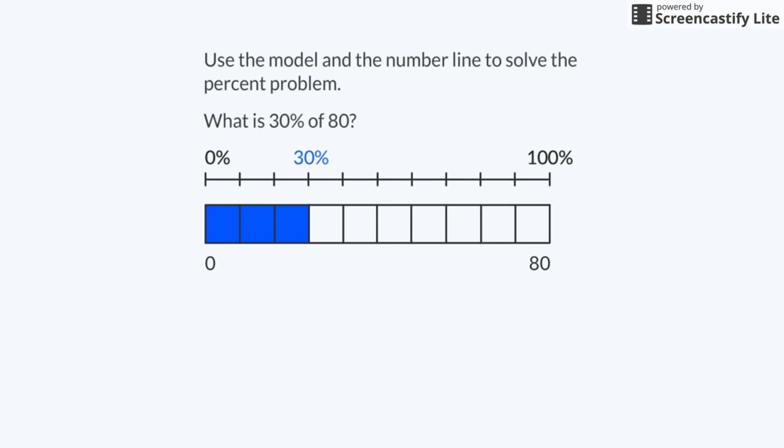Since each section represents 8 parts of the whole, 3 sections represent 3 times 8, or 24. 30% of 80 is 24.